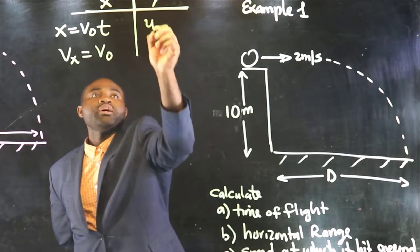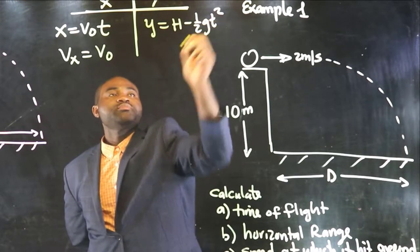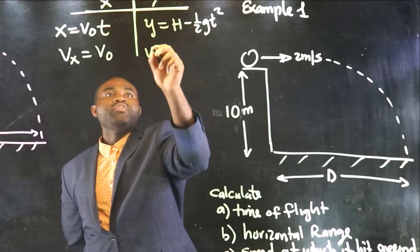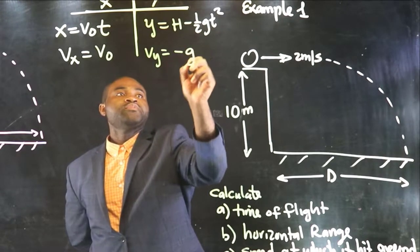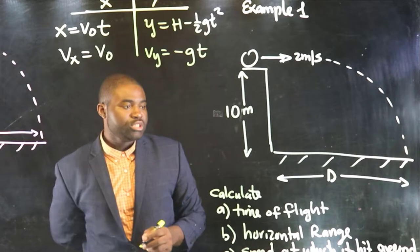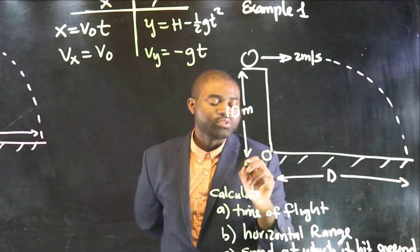Here, y is equal to h minus one-half gt squared. And vy is going to be equal to negative gt. Obviously, we are assuming that the origin is right there.